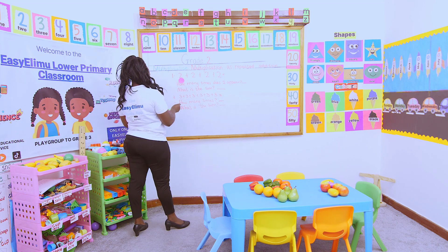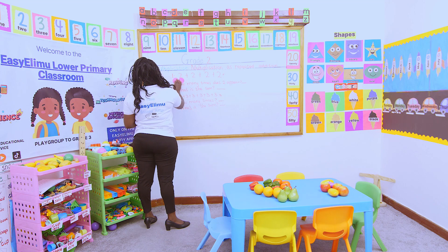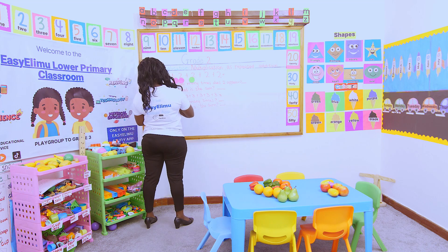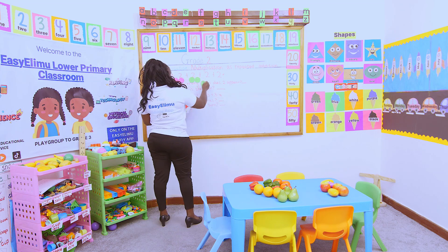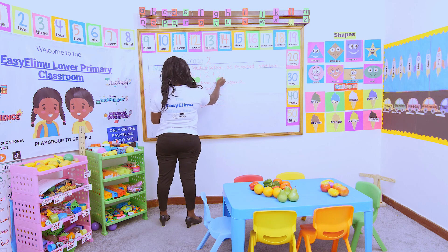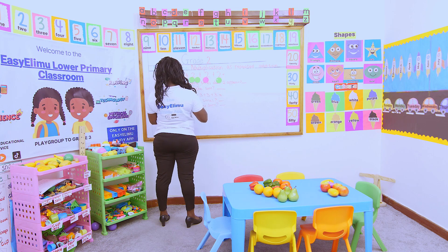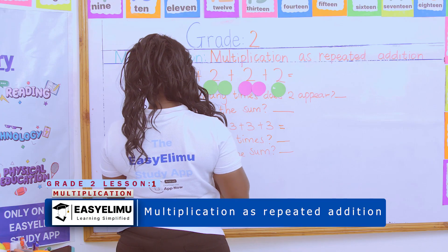One, two, three, four — those are the number of times that two appears. But when they ask what is the sum, the sum means you have to add. When it comes to adding, you can add the balls, you can add the fruits on the table — it depends on what you want to add. For me, I have chosen number one; I will add the cards, then the next one I will add the fruits on the table.